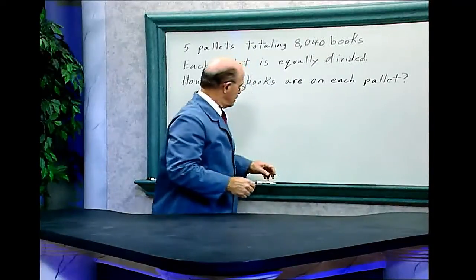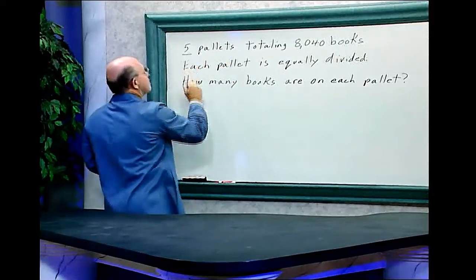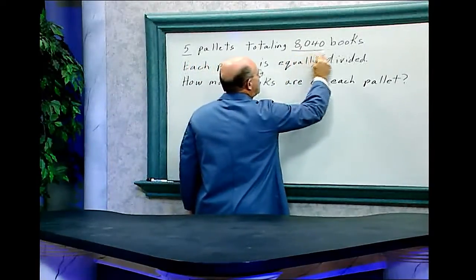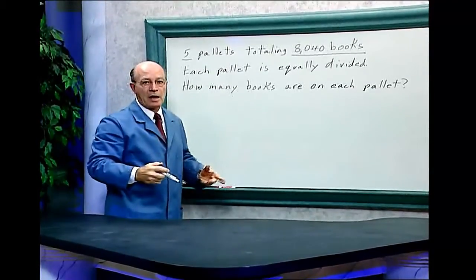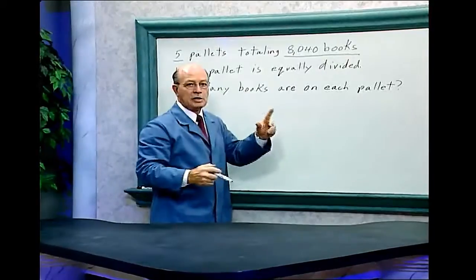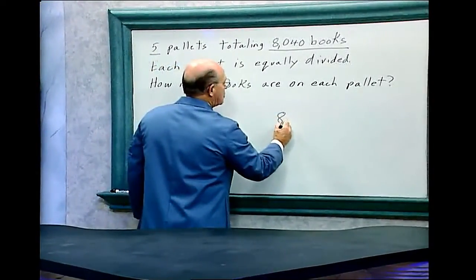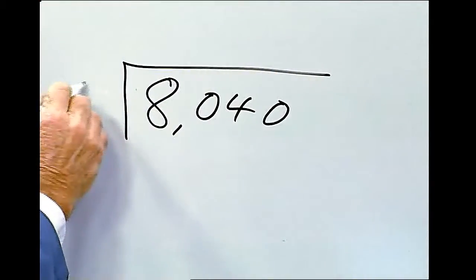Let's do the math. There are five pallets. And on those five pallets, there are 8,040 books. Now each pallet happens to be equally divided. And the question is, how many books are on each pallet? So we've got to divide 8,040, divide that by 5.